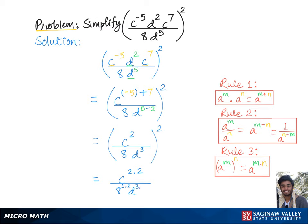Which is equal to c raised to the fourth power over 8 squared would be 64, times d raised to the sixth power, which is the final answer.